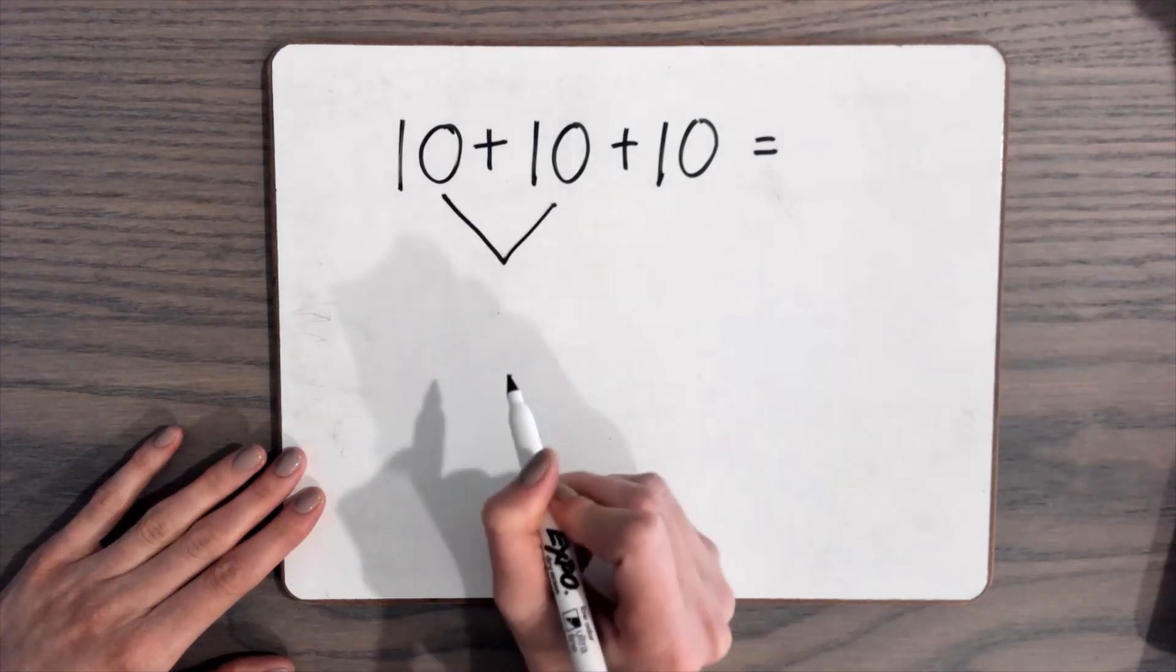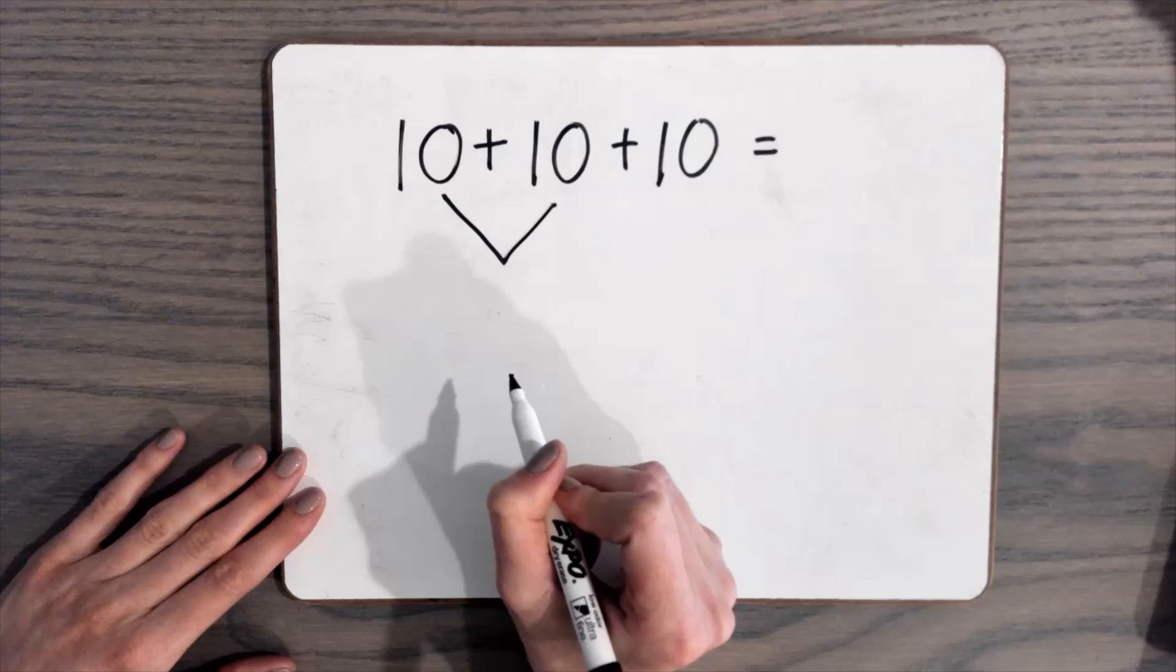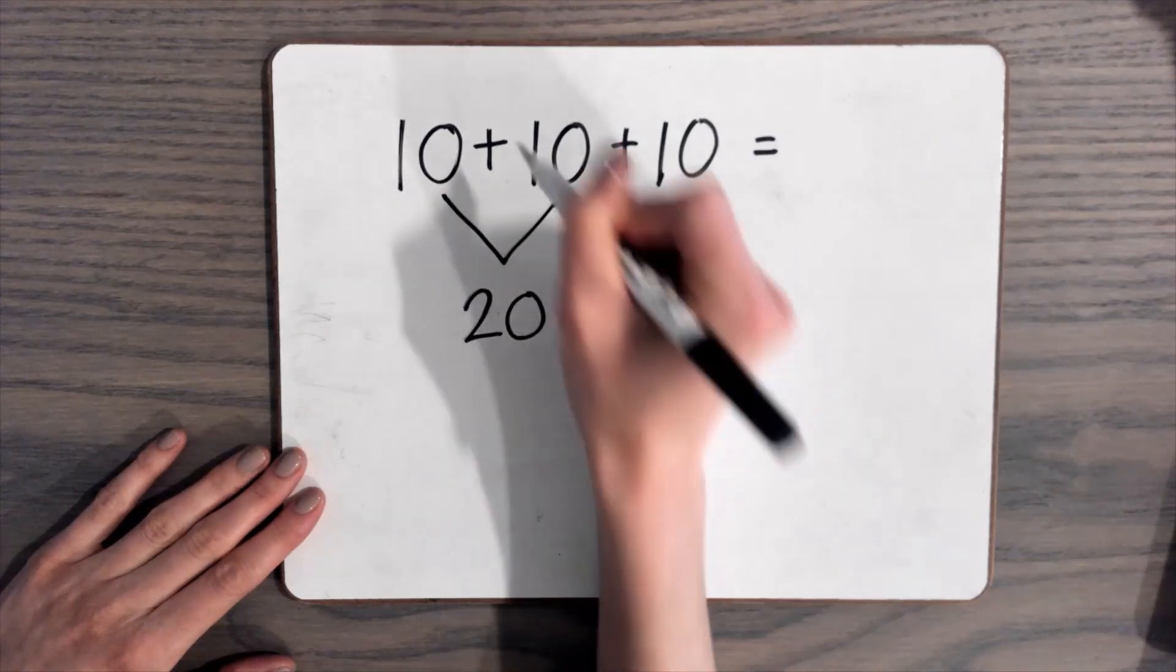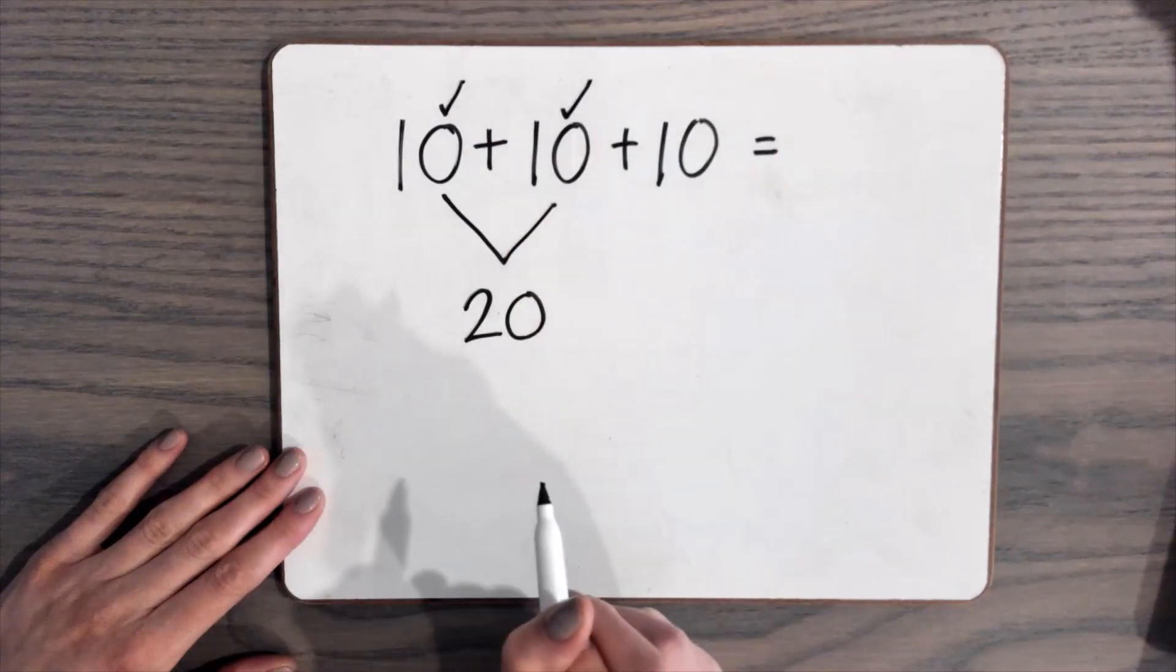10 plus 10 more, I know 10 plus 10, that's a double, is 20. And remember, we check off the numbers we added already.